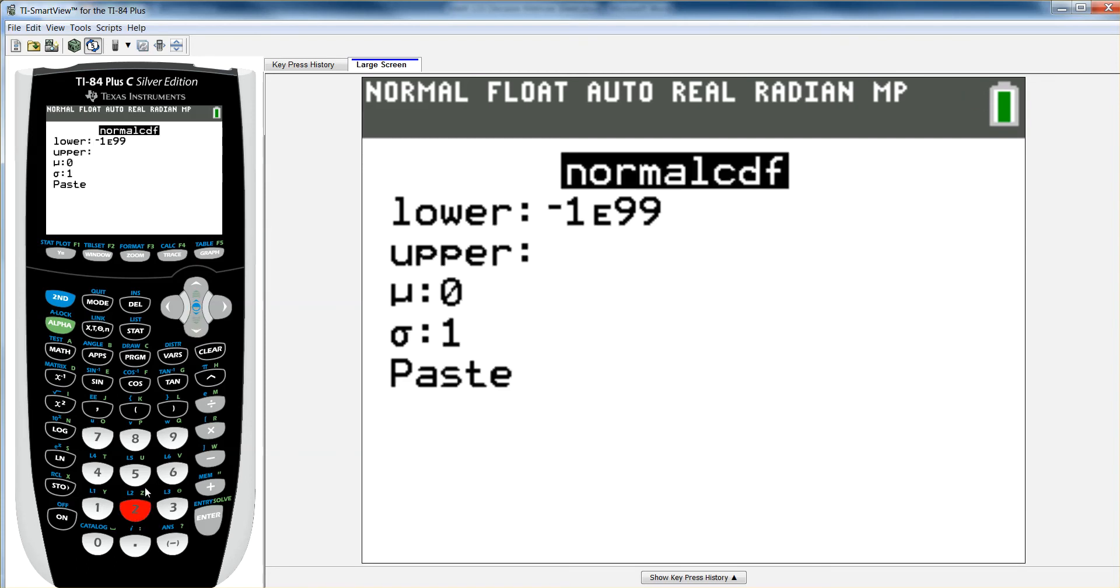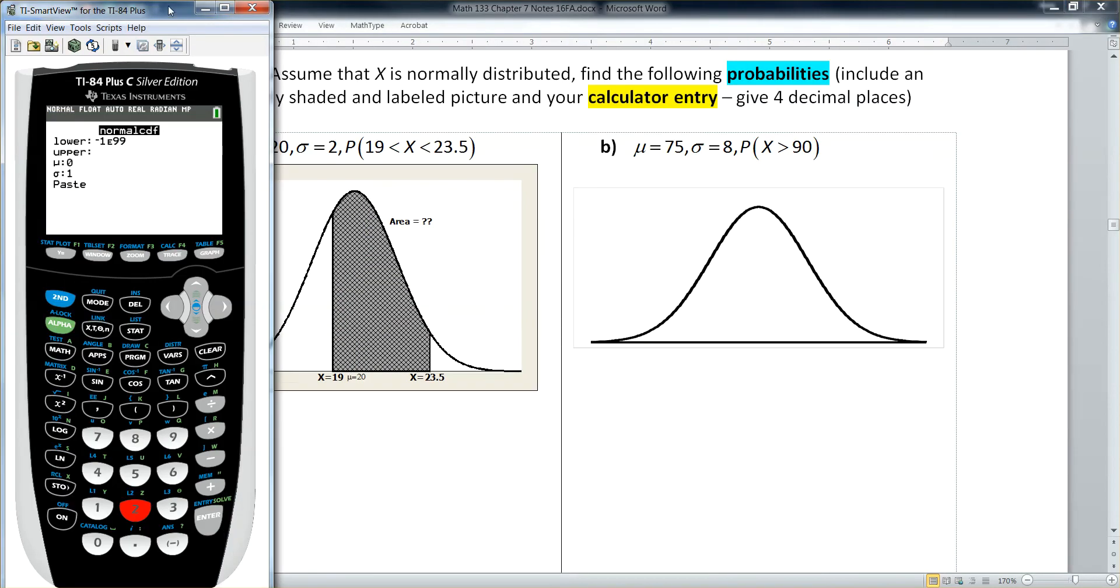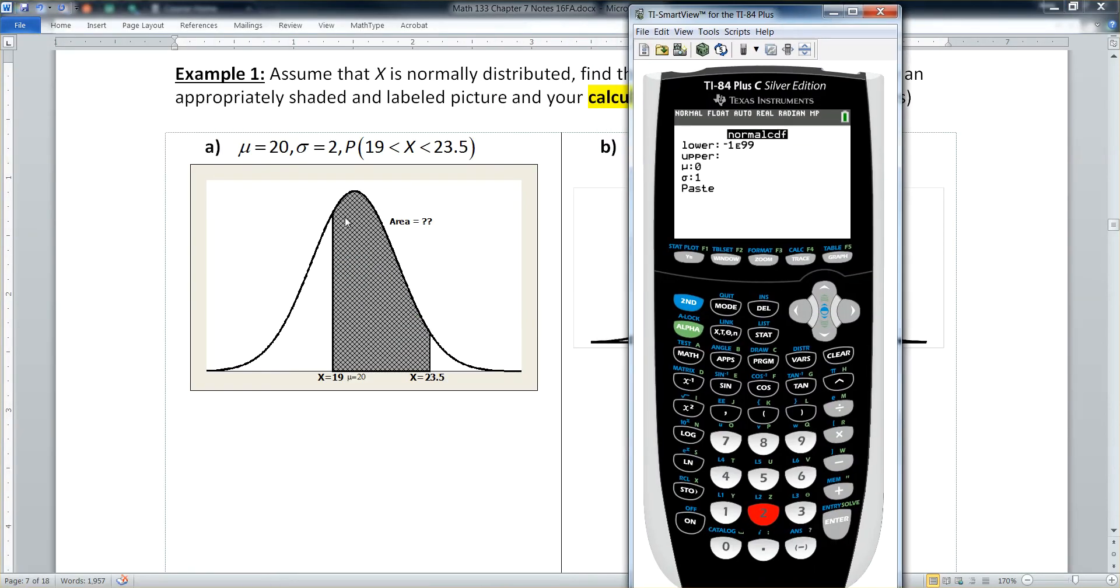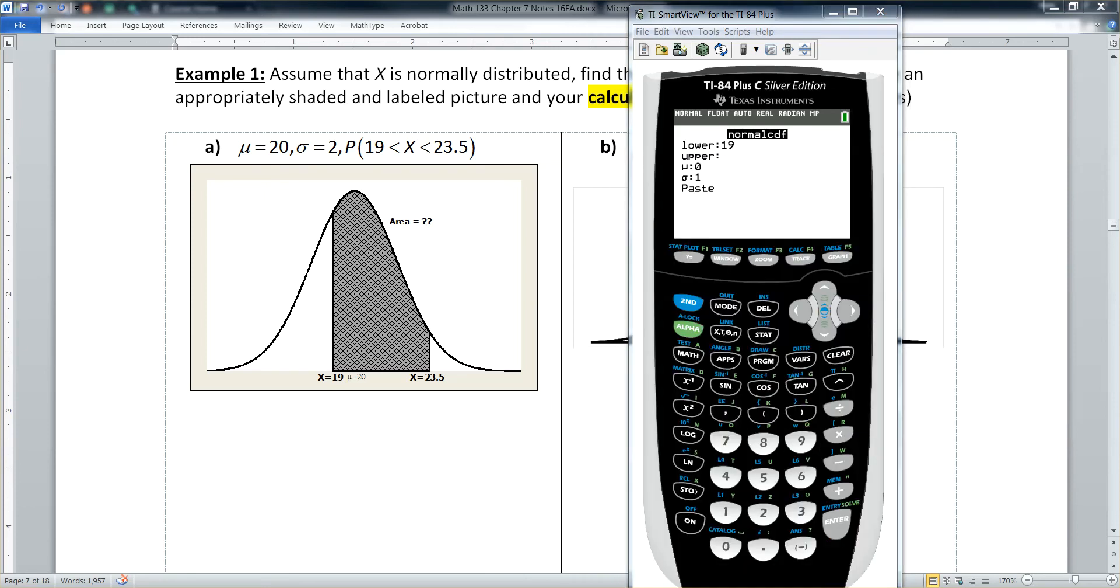All right. Now it's saying what's the lower edge? What's the upper edge? What's the mean? And what's the sigma? The standard deviation. So when we look at what we've shaded, the left hand edge, the lower edge of what we shaded was 19. Enter. There we go. The upper edge was 23.5.